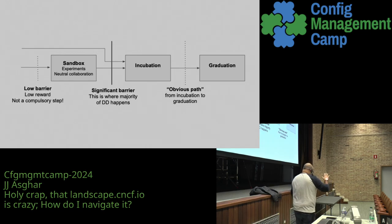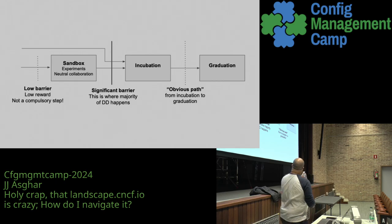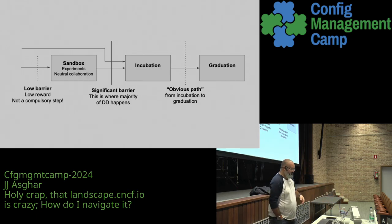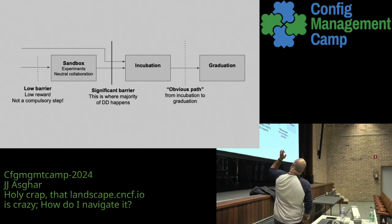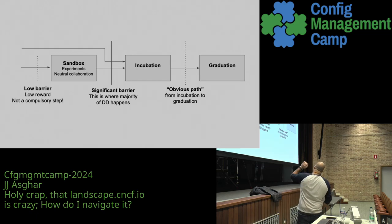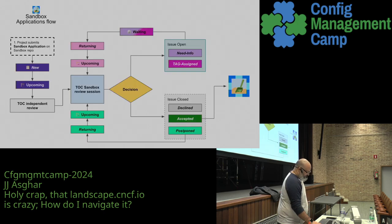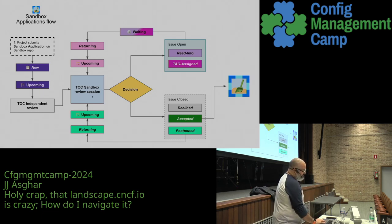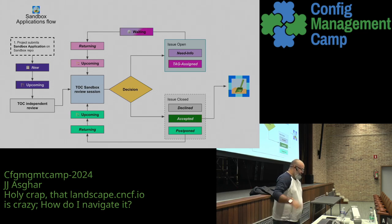This is taken from the actual process: you start in the sandbox, go through a couple of conversations, a couple of PRs, and then you get to incubation, then graduation. This is directly from the CNCF documentation. It's like two PRs to get a project into the sandbox, which is kind of nice. This TOC sandbox review progression decision is surprisingly quick — there's enough people involved in this ecosystem that things really do come around quickly.